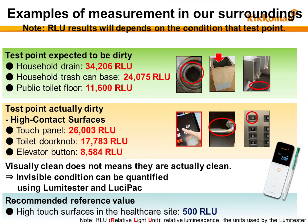Here you can see examples of measurements in our surroundings with the LumaTester and Lusipac. Measurements of locations that are generally considered to be contaminated may show values of 10,000 or more. High-touch surfaces frequently contacted by many people can be just as dirty, and LumaTester measurement values confirm this even if the area seems visually clean. High LumaTester values mean that soil and dirt still remain on that test point. For infection prevention and control in hospitals, results of environmental hygiene after cleaning are recommended to be 500 RLU or less when measured with the LumaTester.